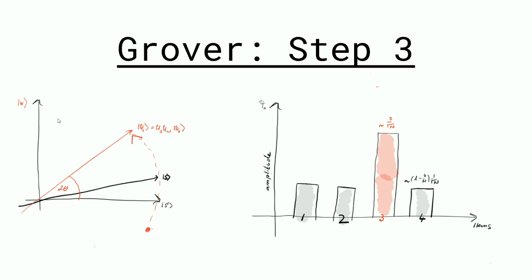And when we take a measurement then, there's going to be a very high probability of the results that we got. The observables that we saw from the qubits are going to be the item that we're looking for.